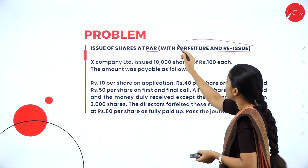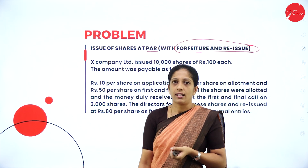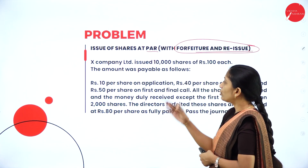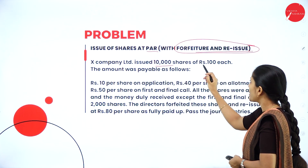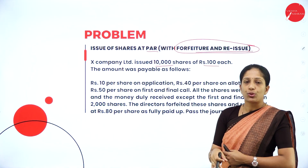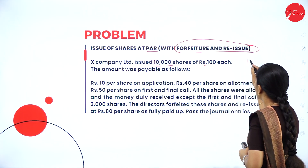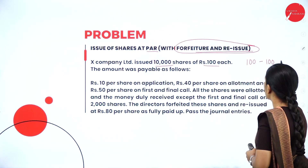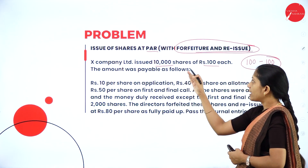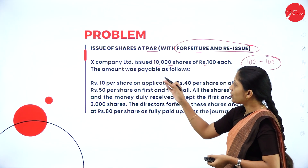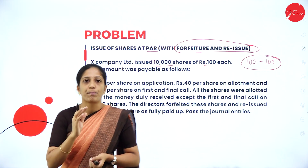We have already discussed problems on forfeiture and reissue in second PUC. Now, X Company Limited issued 10,000 shares of ₹100 each — this is issue of shares at par, meaning a ₹100 share issued at ₹100 only. The amount is payable as follows: let us see how the ₹100 is divided into installments.